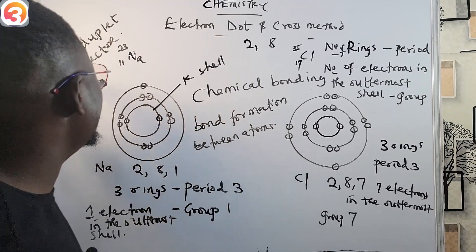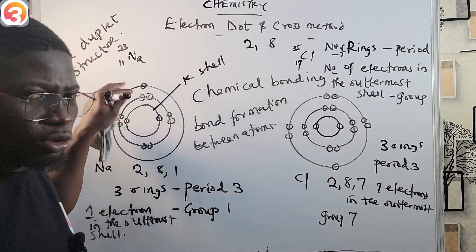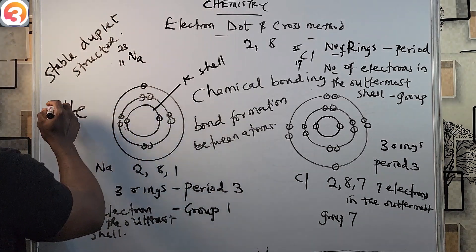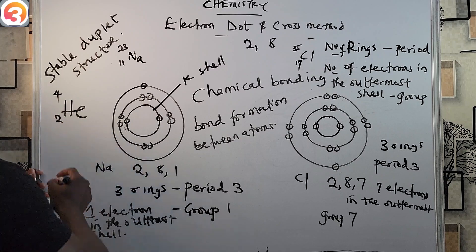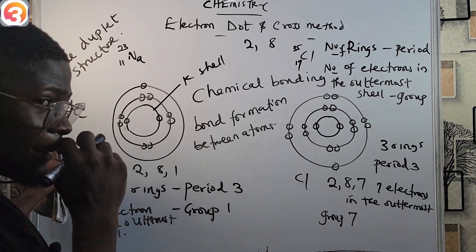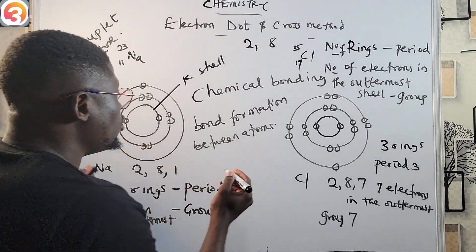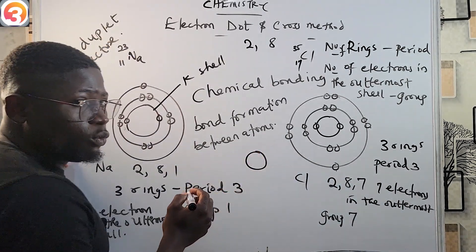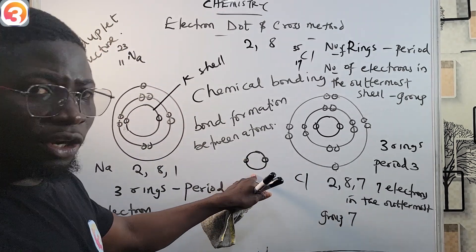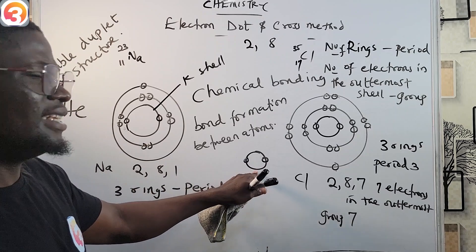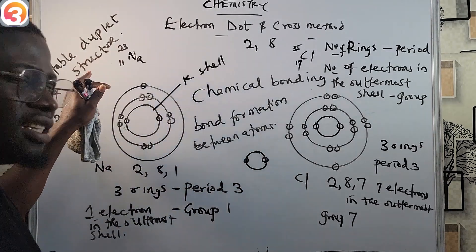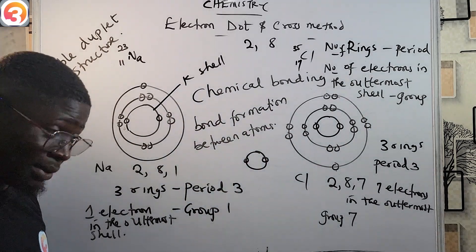When an atom that has only the first K shell contains 2 electrons in its innermost shell, we say it has obtained a stable duplet structure. An example is helium (He), with mass number 4 and atomic number 2. Drawing its electronic configuration using the electron dot and cross method, it has only one ring with 2 electrons in the outermost shell — so helium is stable, signifying a stable duplet structure.